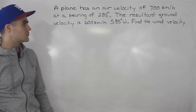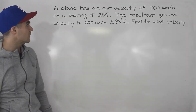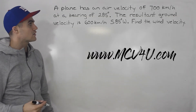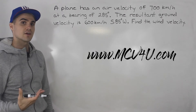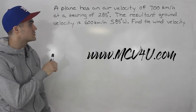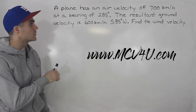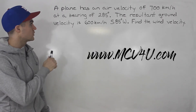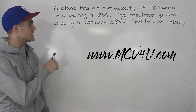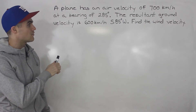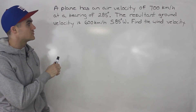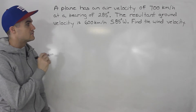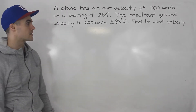Welcome back everybody. Patrick here, moving on to another velocity question. A plane has an air velocity of 700 kilometers per hour at a bearing of 285 degrees. The resultant ground velocity is 600 kilometers per hour south 85 degrees west. Find the wind velocity.